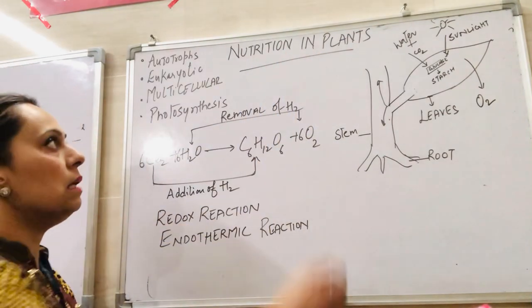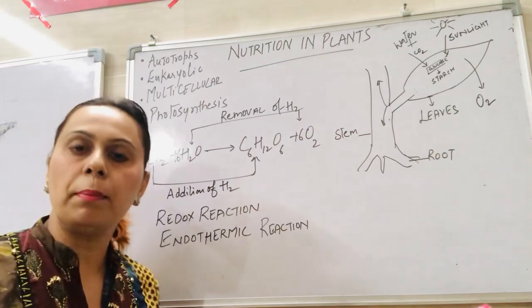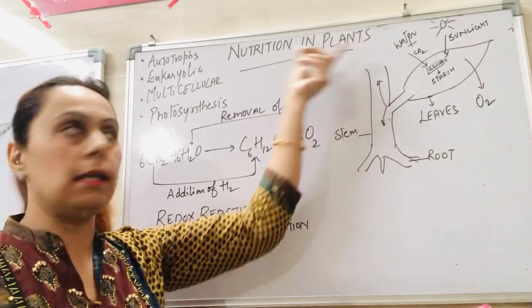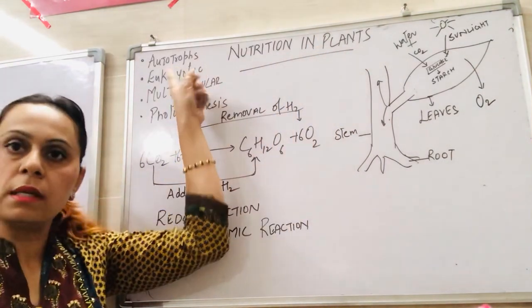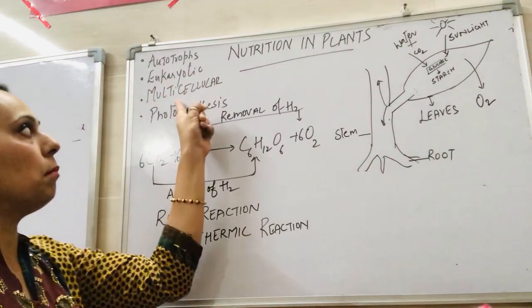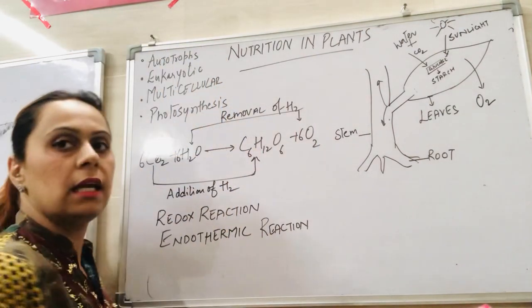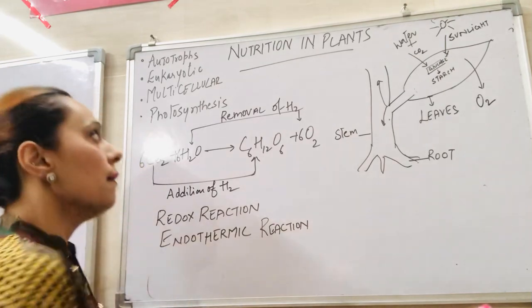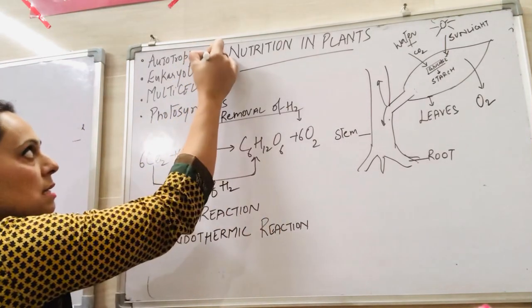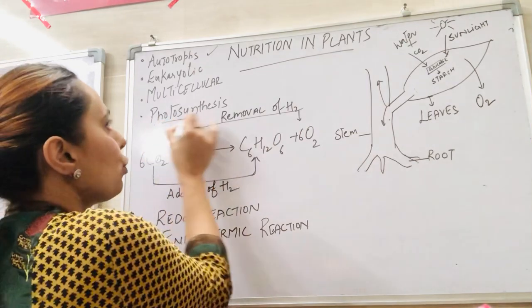In this nutrition in plants, first of all we will talk about the plants. What are plants? Plants actually they are autotrophs, they are eukaryotic and multicellular organisms. These three characteristics are the main basic characteristics and they do the photosynthesis.